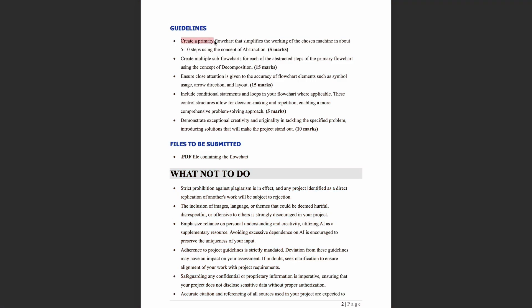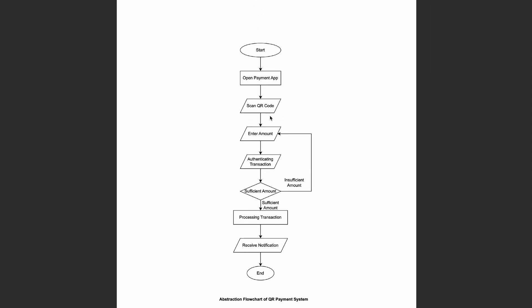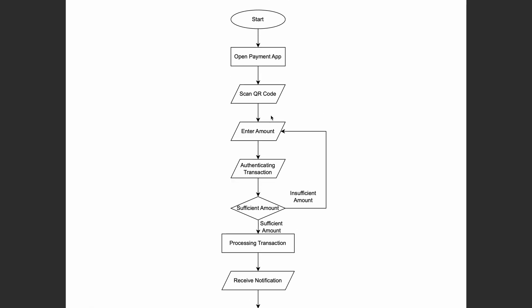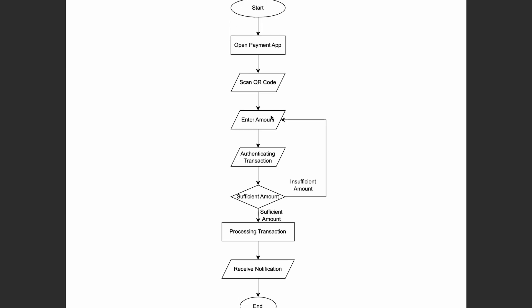Guideline one: Create a primary flowchart that simplifies the working of your chosen machine in about 5 to 10 steps using the concept of abstraction. This section carries 5 marks. For example, you could create a QR payment system flowchart using abstraction, showcasing only the required high-level steps and adding the basic concept of abstraction.